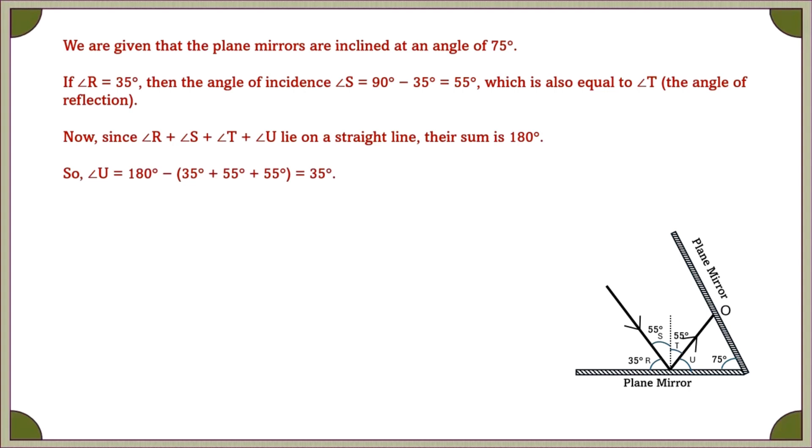So, angle U is equal to 35 degrees. Next, angle U and angle Y and the angle between the two mirrors is 75 degrees form a triangle. Since we know that the sum of interior angles of a triangle are 180, we can find the value of angle Y that is 70 degrees.